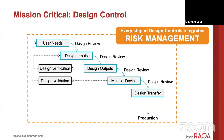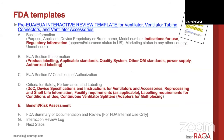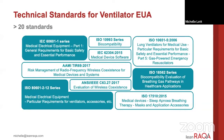The FDA has a whole formal process for how to design and document design controls, and the most important thing is that risk management is integrated the entire way. This even means during the emergency use authorization — if you look at the table of contents for the EUA, several of the elements, which I've highlighted here in red, are direct outputs of the design and development and risk management process. So you really can't cut these corners. And in the ventilator EUA, there are over 20 technical standards from a variety of families that are cross-cutting and touch almost every aspect of your product design.